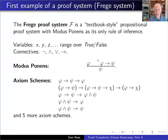Here are the first five standard axiom schemes for a commonly used Frege system. The first says phi implies (psi implies phi), where if-then groups from right to left. The others express similar tautologies—for instance, the last one is: phi and psi implies psi. No matter how you substitute formulas for phi, psi, and chi, the resulting formulas are valid. It's called a scheme because any formula can be substituted for the variables.